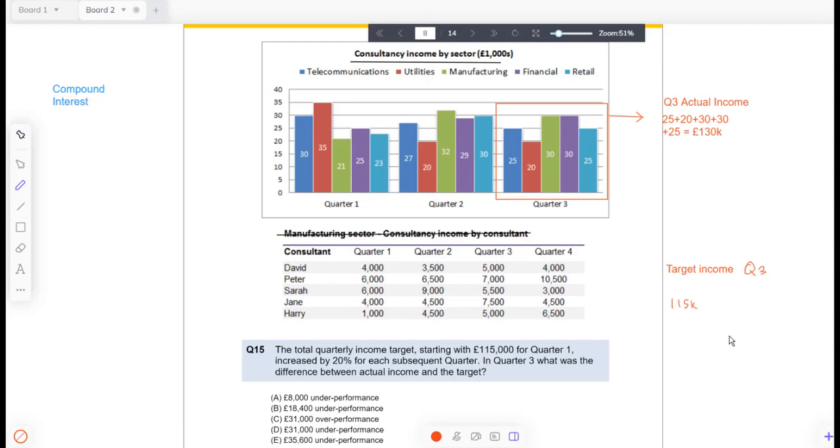So now let's calculate the target for Q3. For Q1, we're told that the quarterly income target is £115,000, which I'm going to put 115k. And for subsequent quarters, for quarter two, quarter three, it's going to go up by 20% each time. This is your compound interest. 1.2 represents 20% increase, and we're doing it for two subsequent quarters to the power of two. Just put that through the calculator and you get 165.6k.